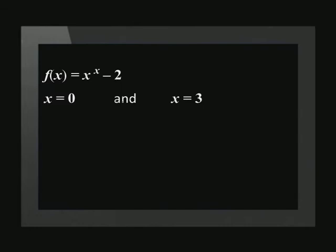When we substitute x equals 0 into the given equation, we see that y is equal to negative 2. Let us call this point A. If we substitute x equals 3 into the same equation, we get y equals 7. We call this point B.